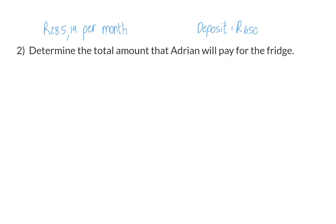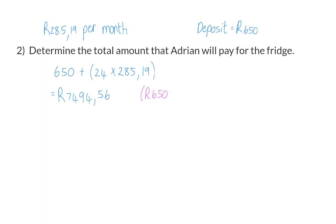Question 2: Determine the total amount that Adrien will pay for the fridge. Right at the beginning Adrien already paid a deposit of R650, and then he will make another 24 payments of R285.19 each. This means in total he will pay R7,494.56 for this fridge instead of the original R6,500. From this example, it is clear to see that even though hire purchase looks like a good option because of the small monthly payment, you will pay a lot more than you should for whatever it is that you are buying.